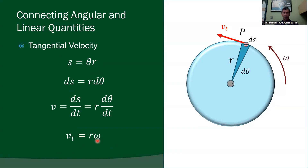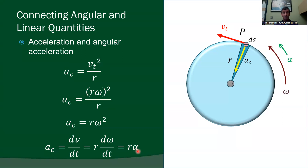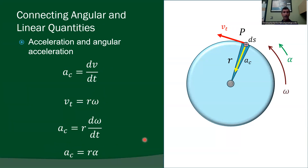Dimensional analysis is important here. Angular velocity has units of radians per second, and since radians are dimensionless, the units are effectively 1/second. Multiplying by meters gives meters per second — the correct units for velocity. Similarly, radians per second squared times meters gives meters per second squared, the correct units for acceleration.